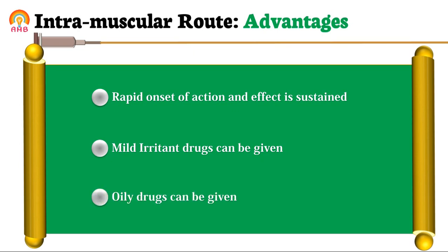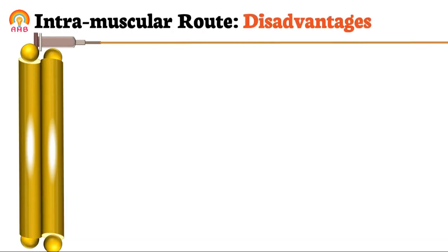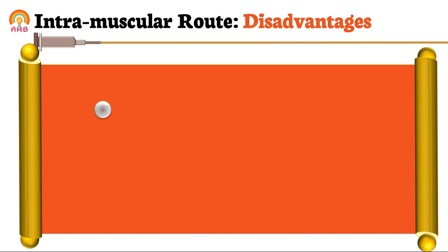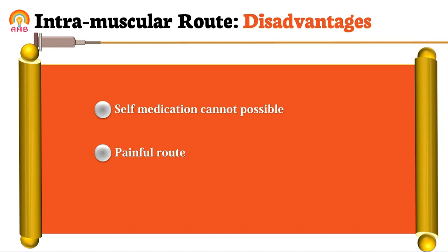Another advantage is that oily substances can also be administered by the intramuscular route, which is not possible by the intravenous route. Now for the disadvantages of intramuscular route: first, self-medication is not possible — a skilled person is required for administration. Second, it is a painful route and can produce abscess formation at the site of injection, with chances of tissue injury.